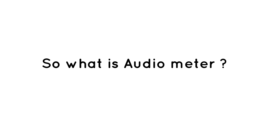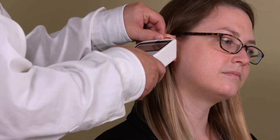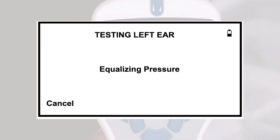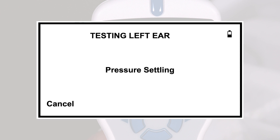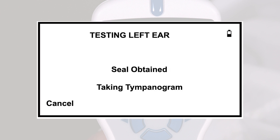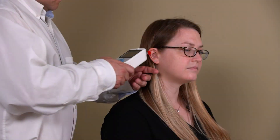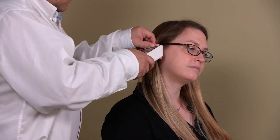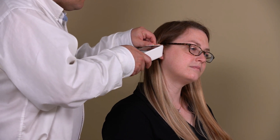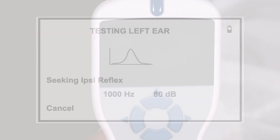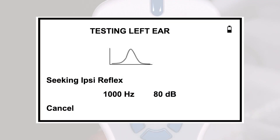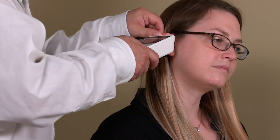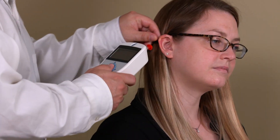So what is an audiometer? An audiometry evaluation is a painless, non-invasive hearing test that measures a person's ability to hear different sounds, pitches, or frequencies. Patients who have a tumor in or around the ear may undergo audiometry testing to determine whether hearing loss has occurred, or to monitor their hearing before and after surgery. It is also used to evaluate whether hearing aids or surgery may improve one's hearing.